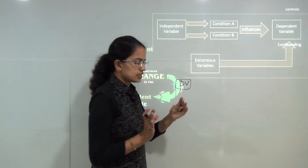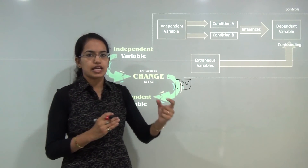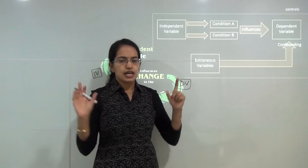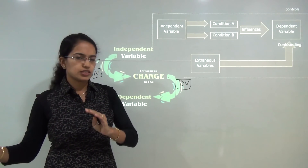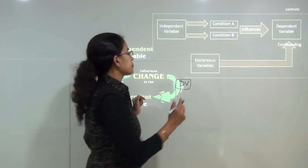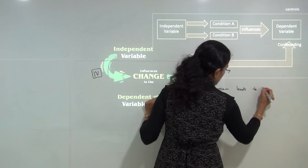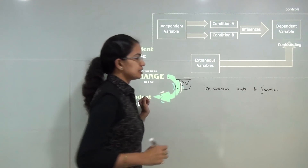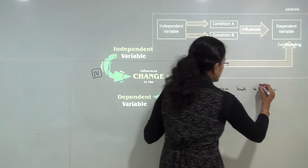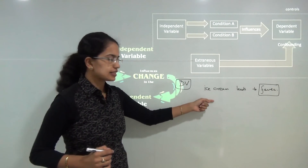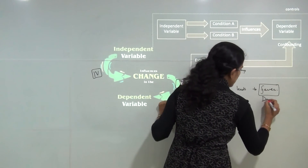In the class on hypothesis we will be focusing on a single example where we will be talking about a child who eats ice cream and runs a temperature. We will be working around the same example throughout all the research methodology classes. So, eating ice cream leads to fever is my statement. Fever here is dependent on eating ice cream, so ice cream becomes the independent variable and fever becomes the dependent variable.